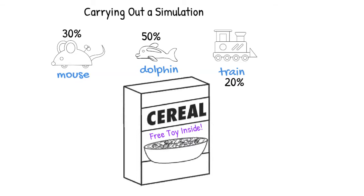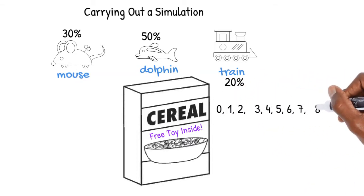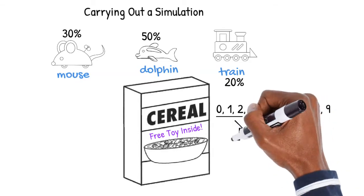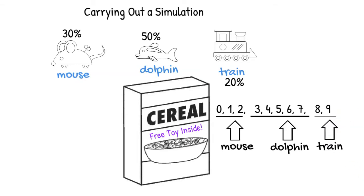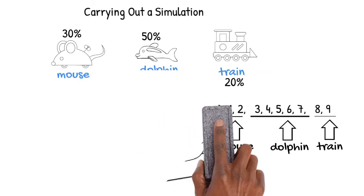We can use numbers to represent our outcomes. I'm using 10 numbers in all, since we can easily break that up into the required percentages. Three numbers are 30% of 10, so I'll use the first three values to simulate pulling a toy mouse out of the box. Five numbers are 50% of our 10 numbers, so I'll use the next five values to simulate pulling a toy dolphin. Two numbers are 20% of our 10 numbers, so I'll use the last two values to simulate pulling a toy train out of the box.